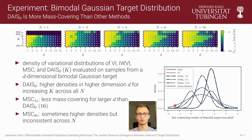In the plot on the top of the page we plot the density of samples drawn from the target distribution under the variational distribution, where higher values correspond to better coverage. We find that DICE-0 has higher densities in higher dimensions for an increasing k across all n. While MSC with one chain is generally less mode-covering for larger dimensions, MSC with eight chains achieves sometimes higher densities, but does so inconsistently.